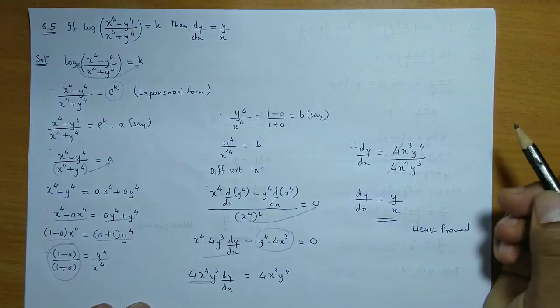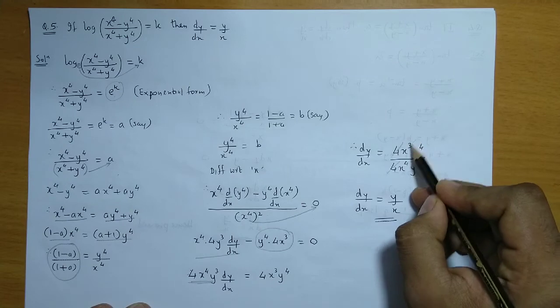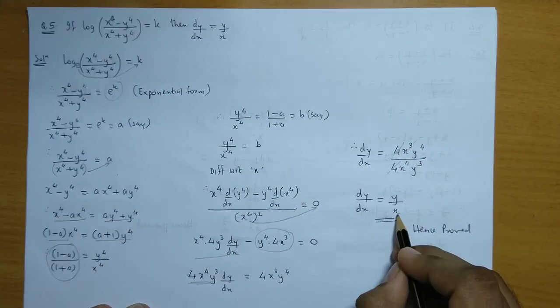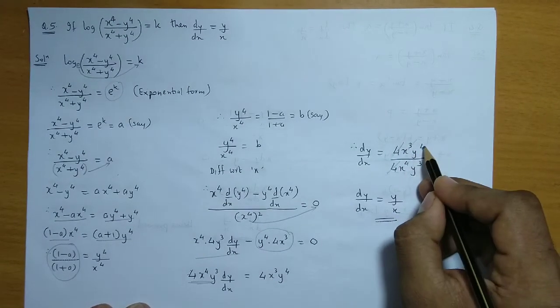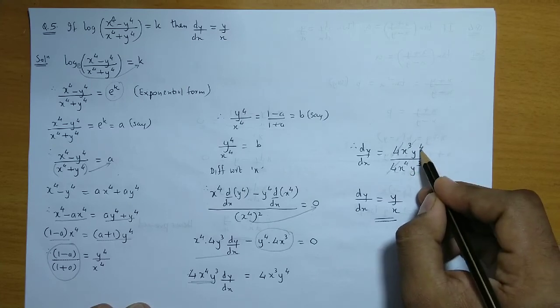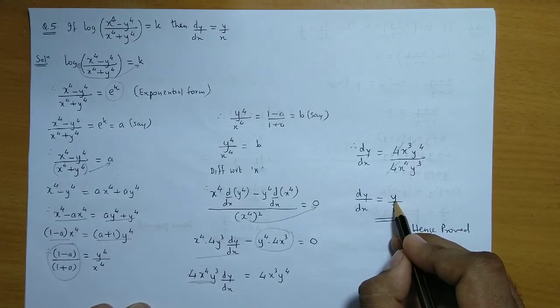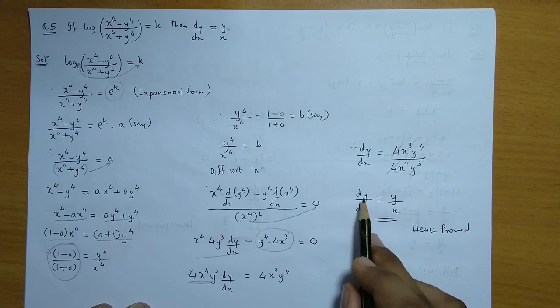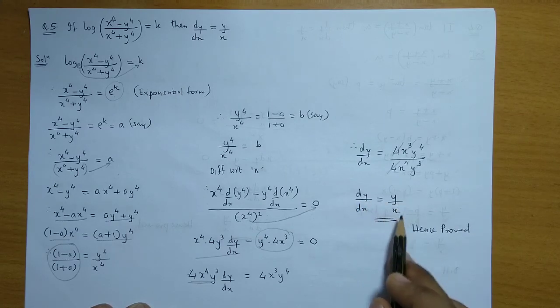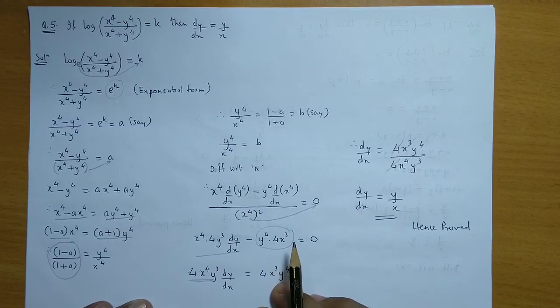Now this 4 and this 4 cancel. From x⁴, x³ cancels. So finally we get dy/dx is equal to y/x, hence proved.